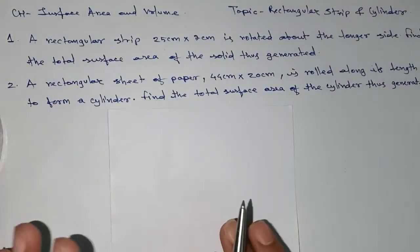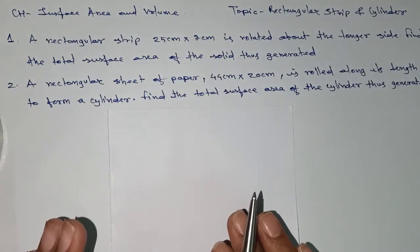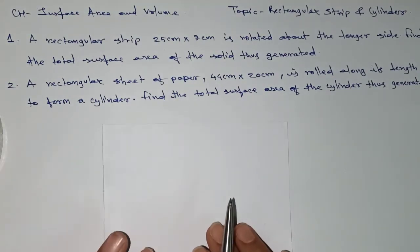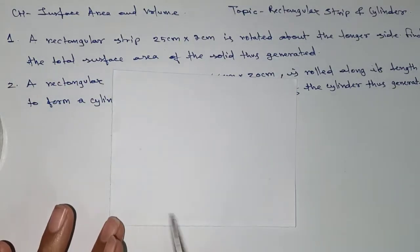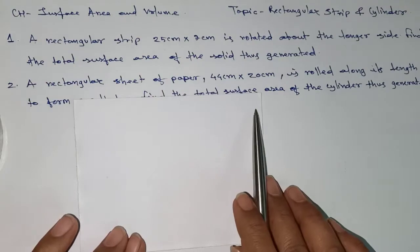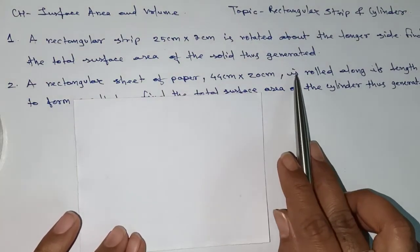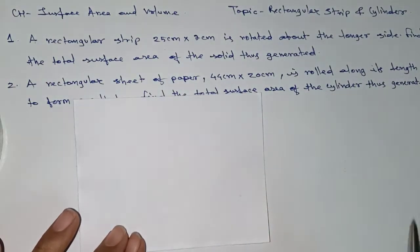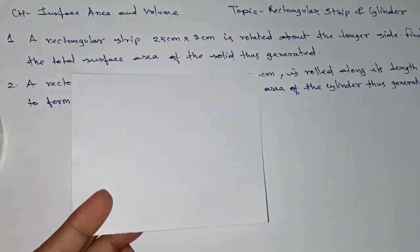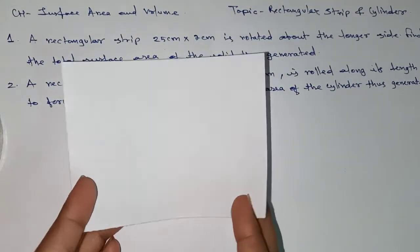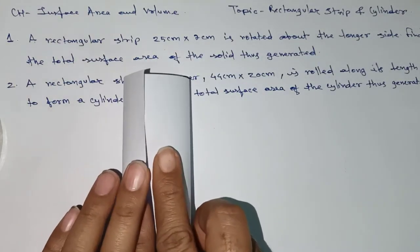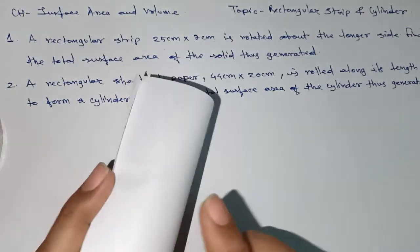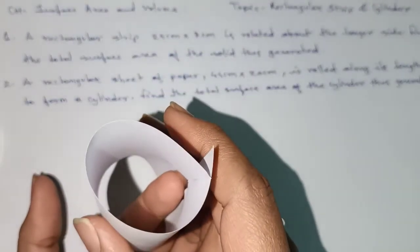The rotation gives you a solid cylinder. For the next one, the rectangle sheet of paper is 44 centimeters and 20 centimeters. They are asking to roll along its length — if you roll it, you will get a hollow cylinder.